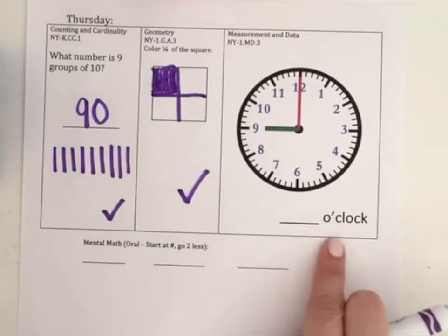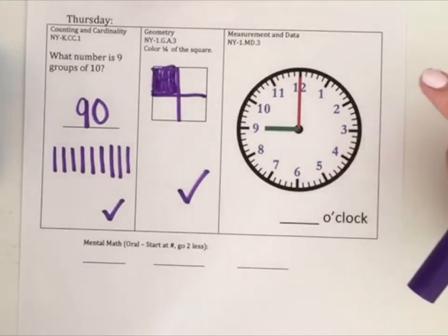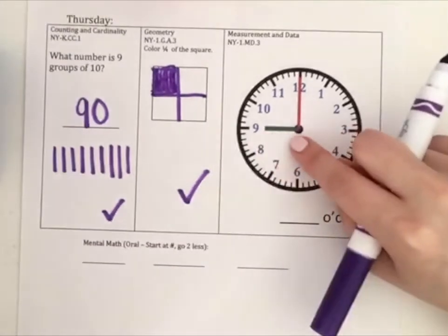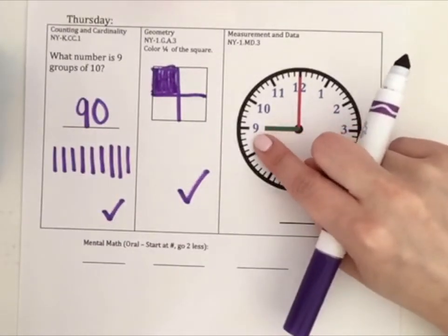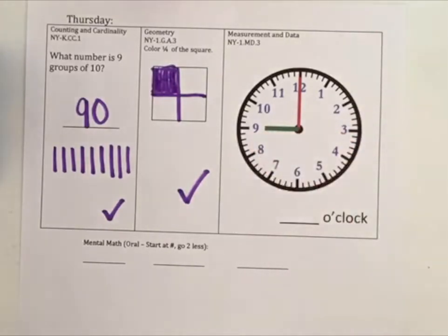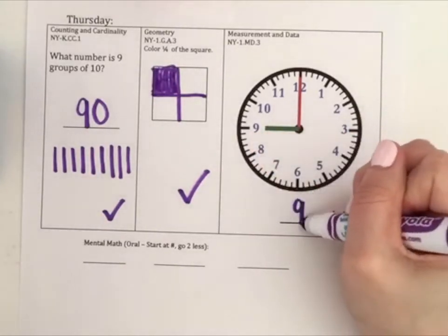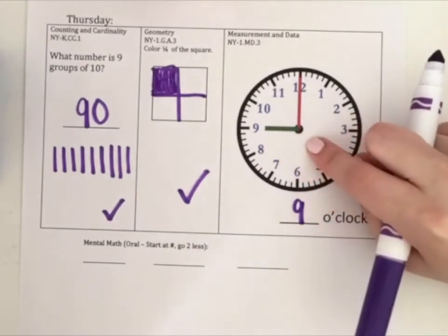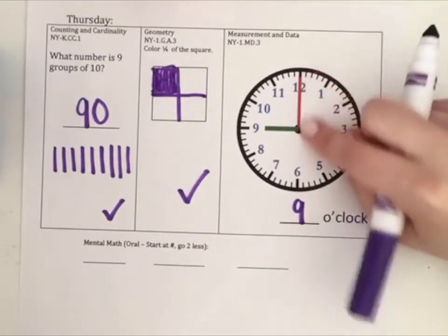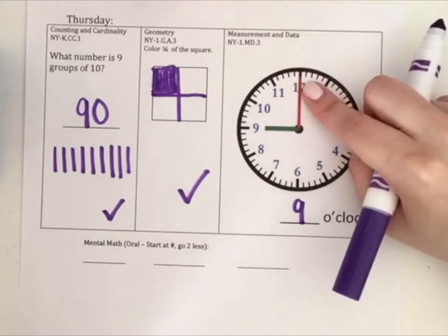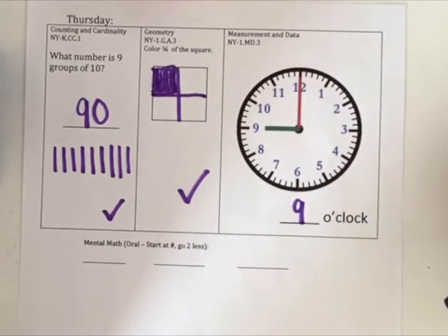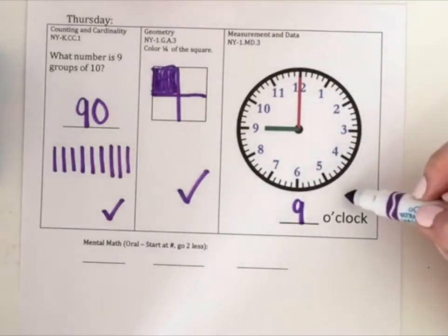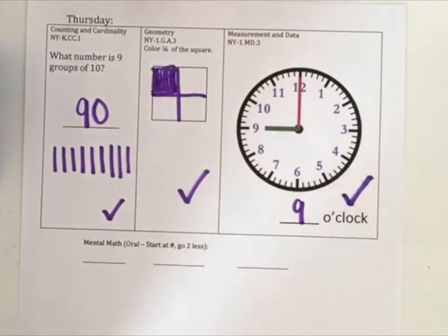Let's take a look at the shorter hand. The shorter hand is pointed to the number nine. So it is nine o'clock because the short hand is at the nine, and the long hand is on the twelve. So it's nine o'clock. Give yourself a check if you got that.